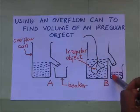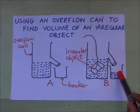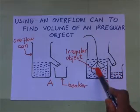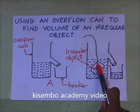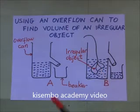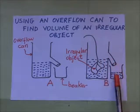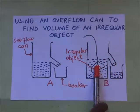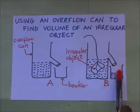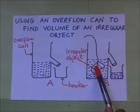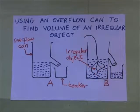The amount of water that collects in the beaker is what has been displaced by this irregular object. So if the irregular object is 20 centimeters cubed, it is going to displace 20 centimeters cubed of water. If it is 30 centimeters cubed, it displaces 30 centimeters cubed. In other words, the object can only displace its own volume of water.